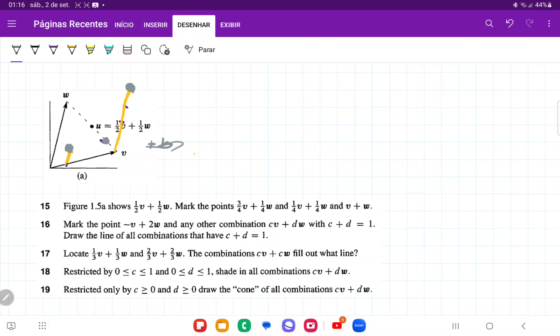And so that is it for number 15. This point here is going to be 3 quarters v plus 1 quarter w. This point here is going to be v plus w. And that one here is going to be 1 quarter w plus 1 quarter v.